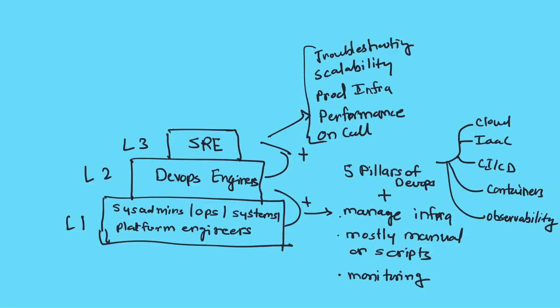The third level — the cherry on top — is site reliability engineers. These are highly experienced people who have done everything DevOps engineers do and more: building and managing infrastructures, dealing with performance issues, release engineering, and managing production infrastructure. They're the elite group of operations people who manage production infrastructure, handle SLAs and SLOs, optimize performance, manage incident response, and take an engineering approach — automating this year whatever they had to do manually.